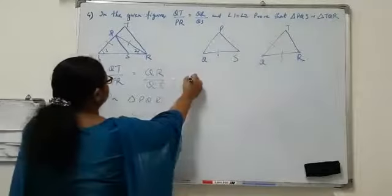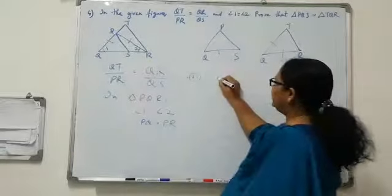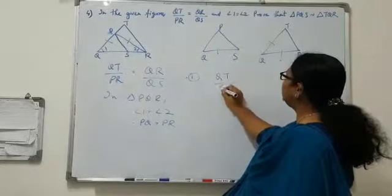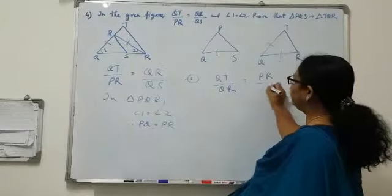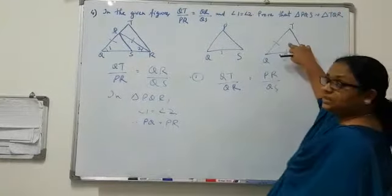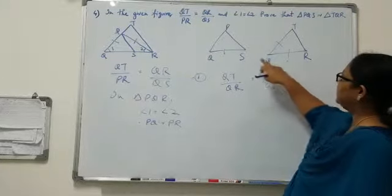Now, in the given condition, we can make a rearrangement. We will write QT by QR is equal to PR by QS. This is according to the triangle. QT by QR equal to PR by,